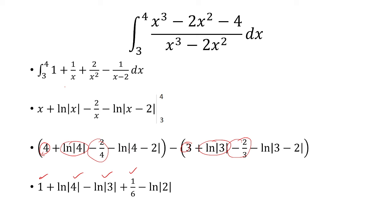And ln of 4 minus 2 is ln of 2. So we have a minus ln of 2. And then we have 3 minus 2 is 1. So ln of 1 is 0. So this goes away.